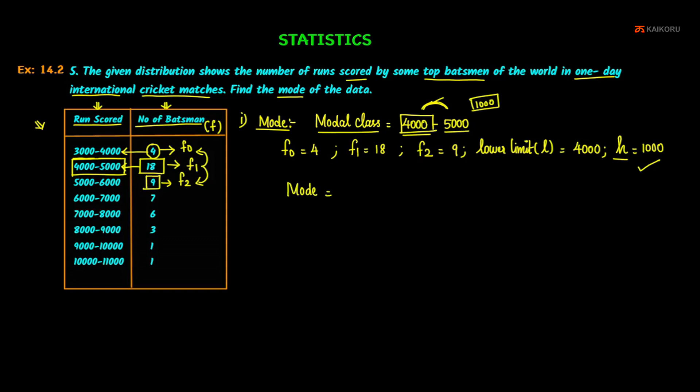Mode formula is Mode equals L plus F1 minus F0 divided by F1 minus F0 minus F2 into h. So in the formula, substitute and we can find the mode.